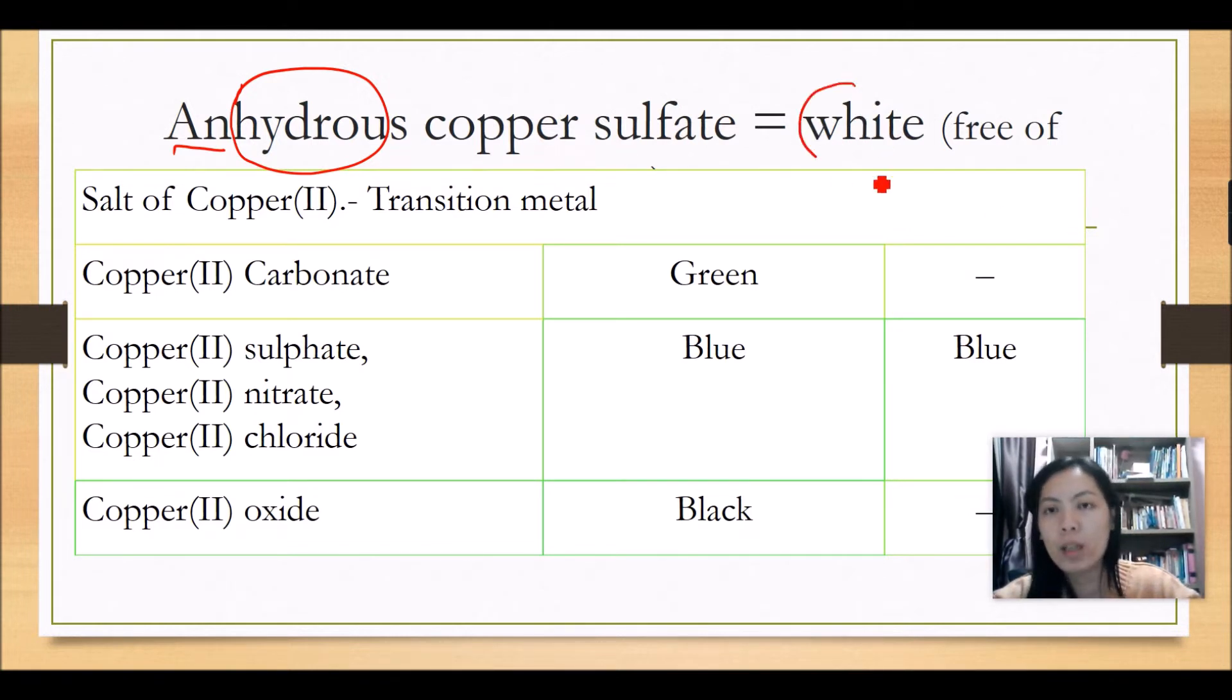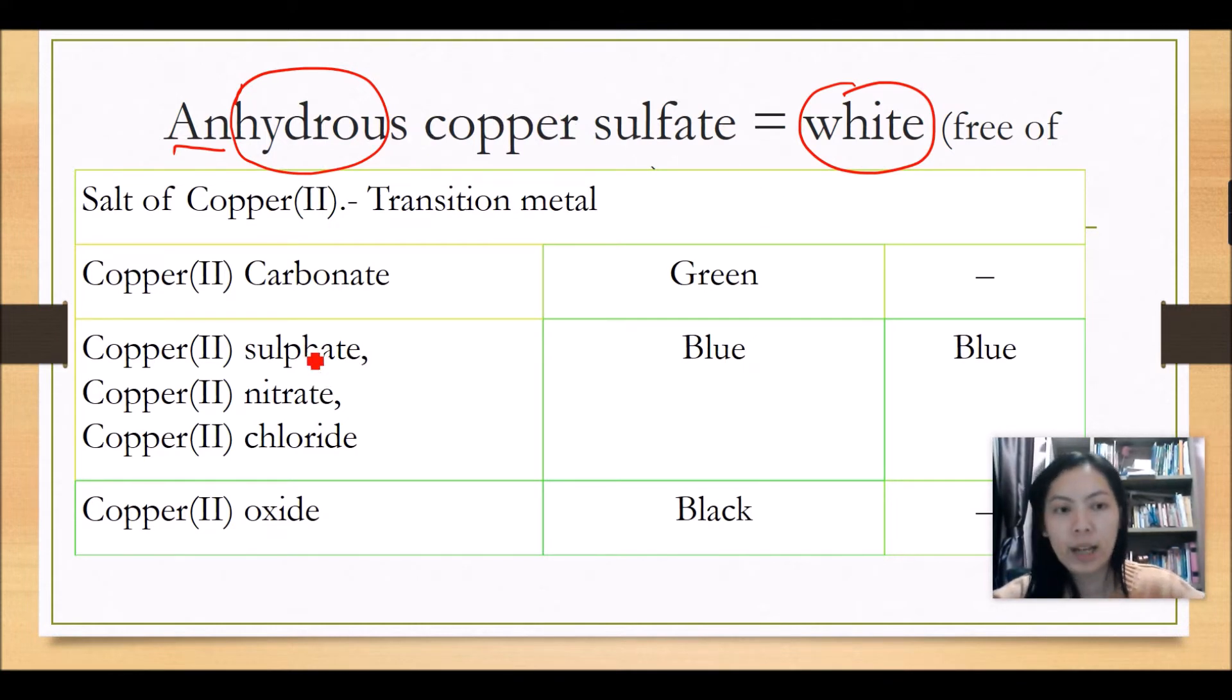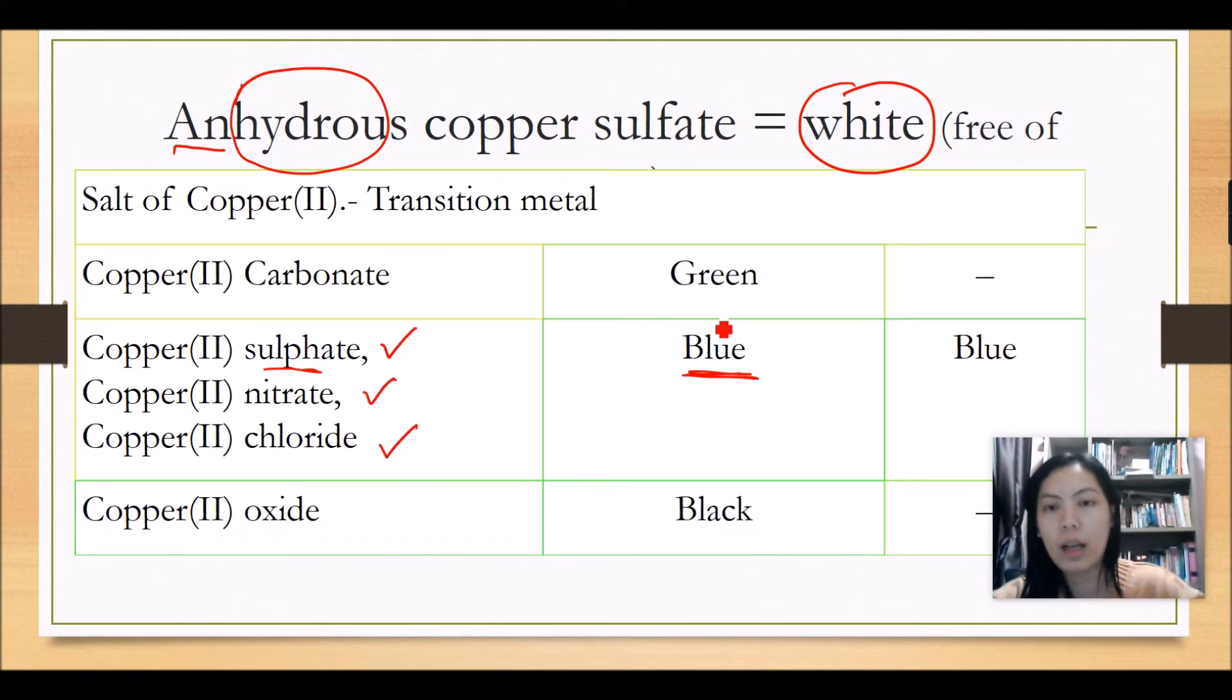But when there is water, the copper sulfate will be blue in color. So yes, in general most of the copper salts such as copper sulfate, copper nitrate, and copper chloride, they are blue in color.